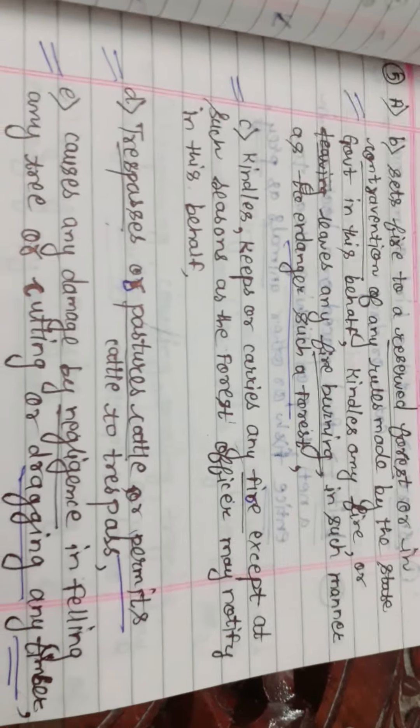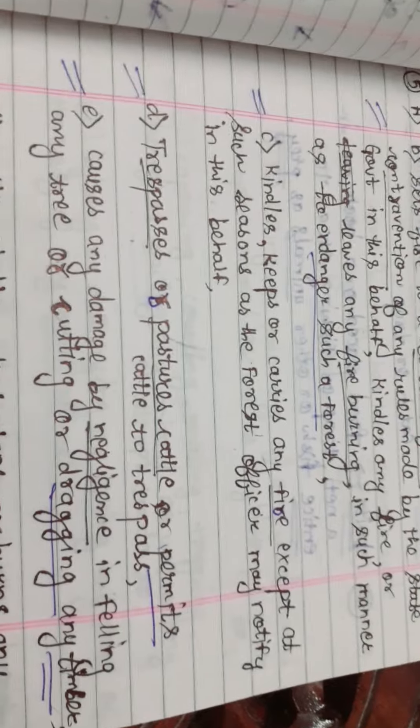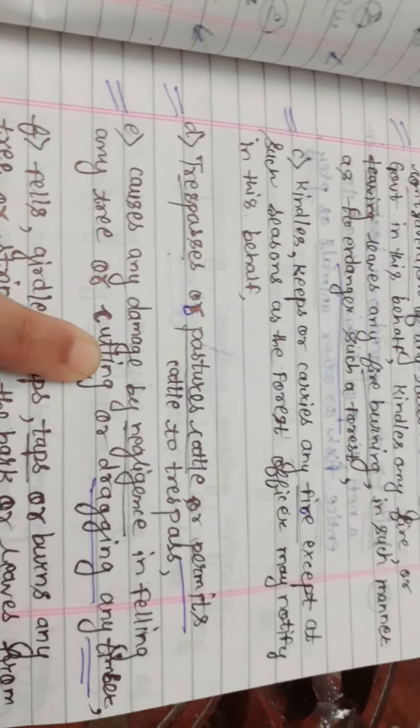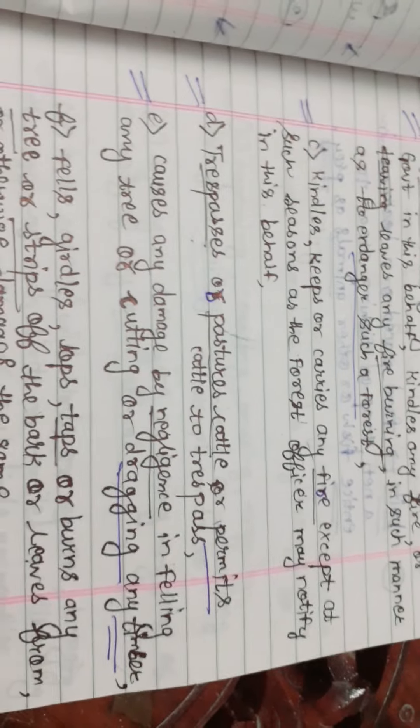Next is trespass or pastures the cattle or permits the cattle to trespass or causes any damage by negligence in felling any tree or cutting or dragging of any timber.